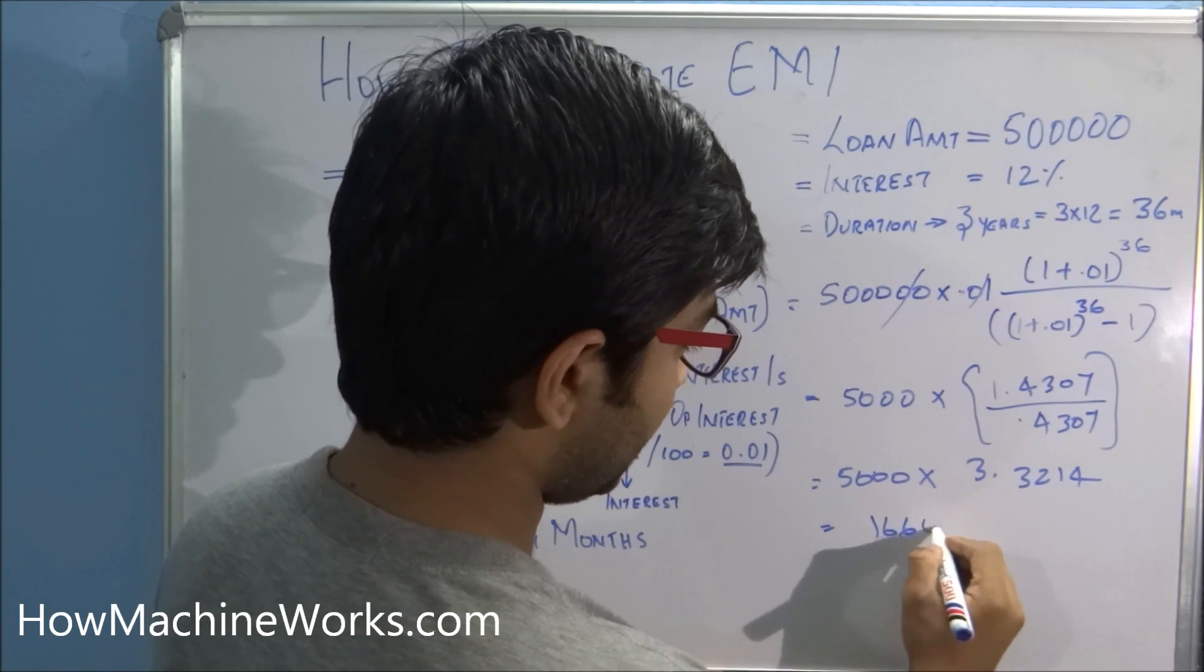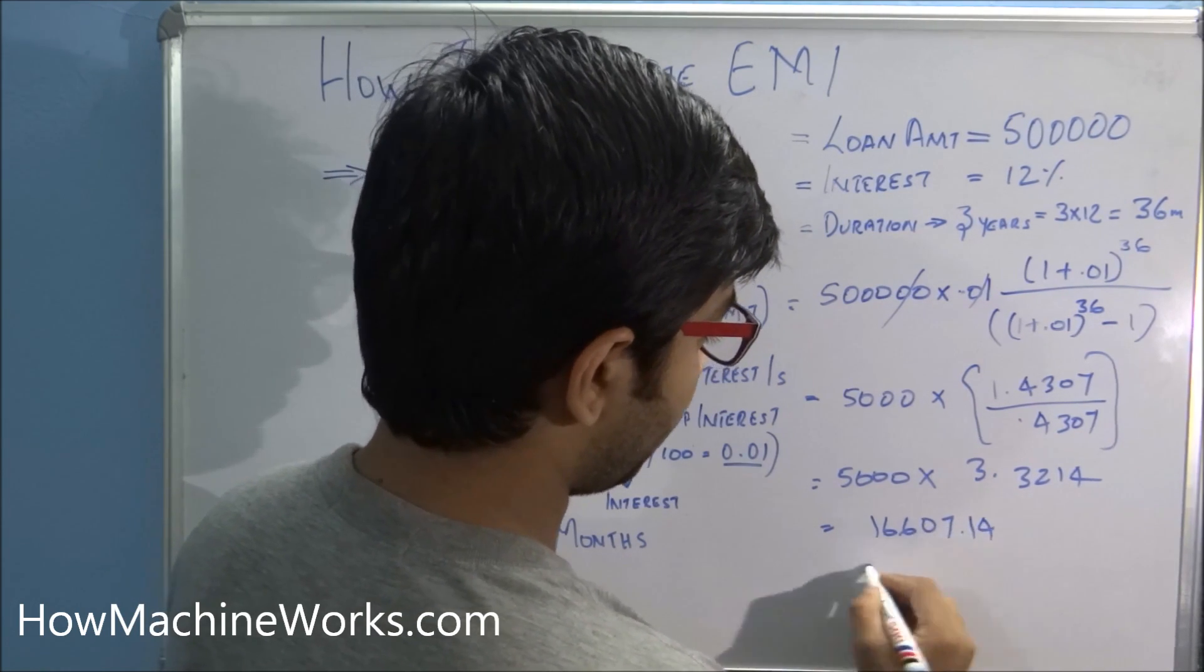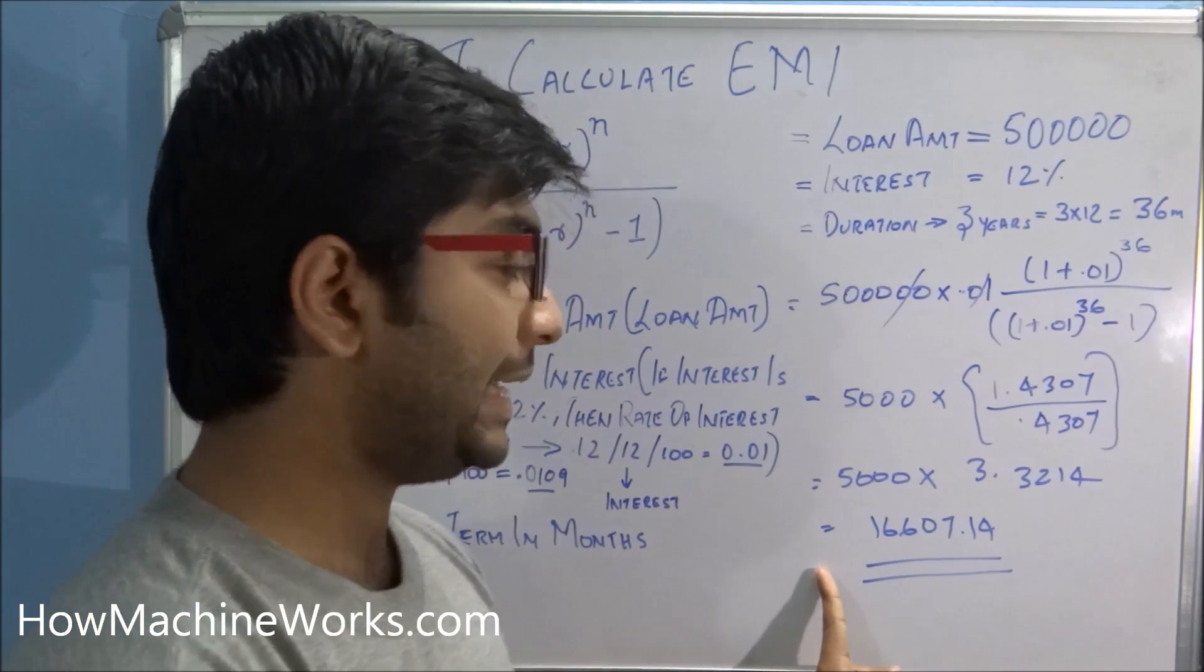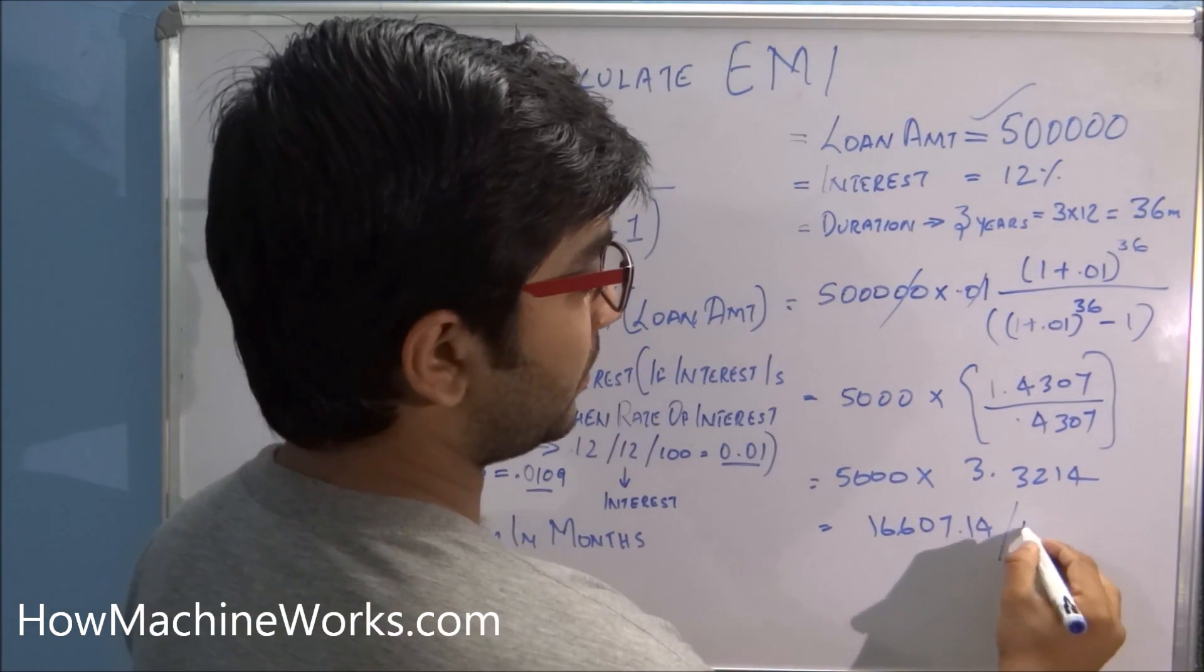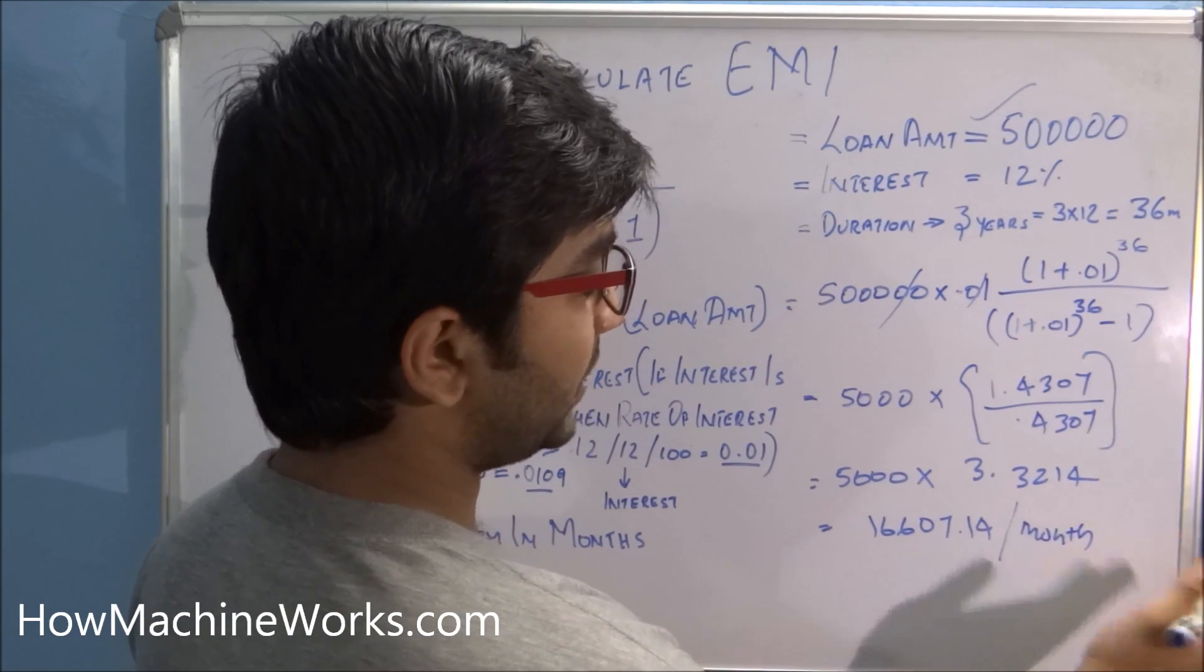So this is your monthly EMI: 16,607.14 per month. So if you need to calculate the total amount you need to pay, you need to multiply this with 36.